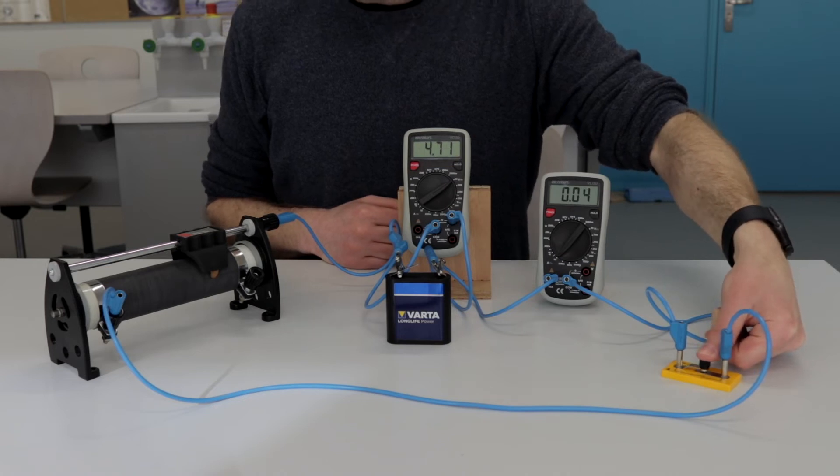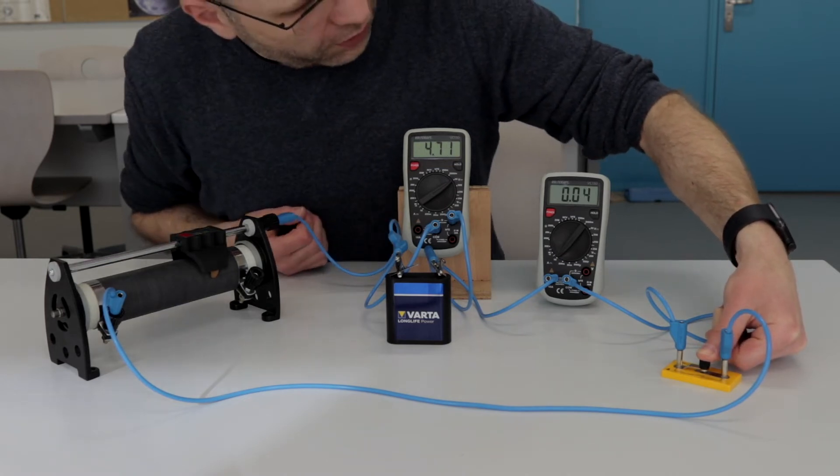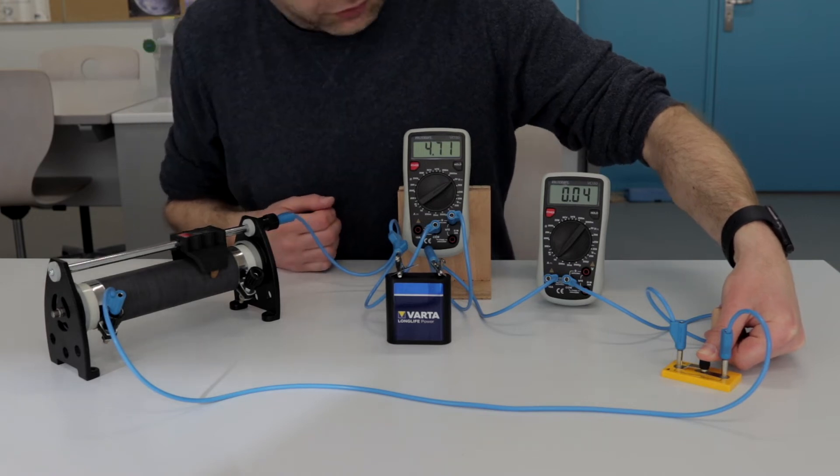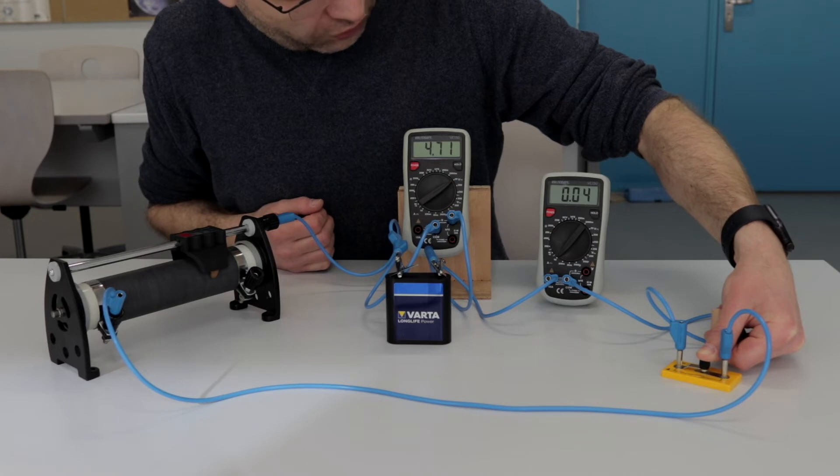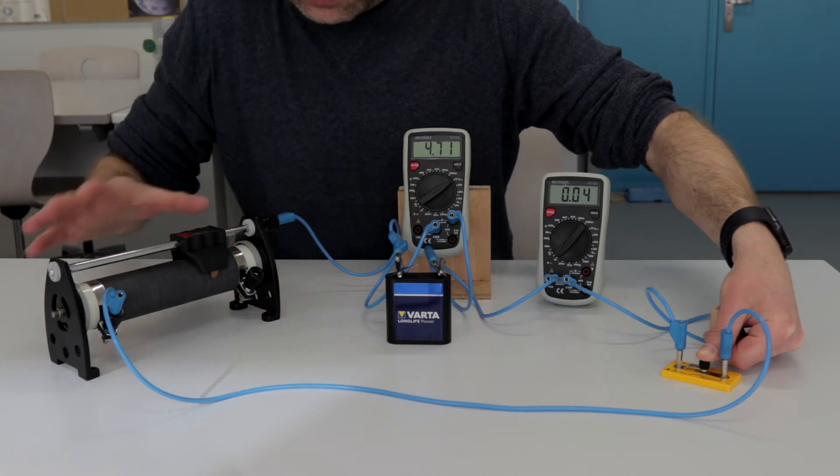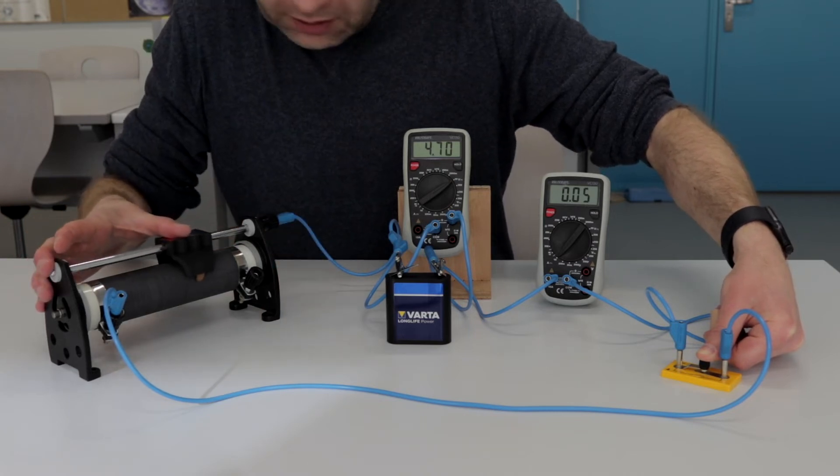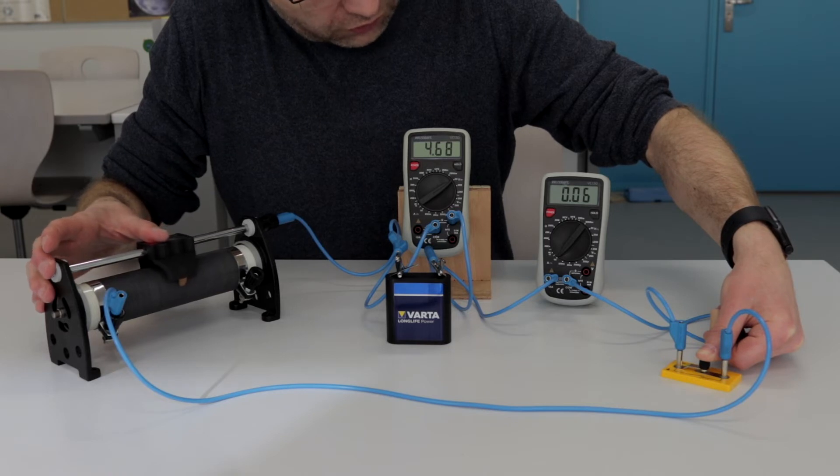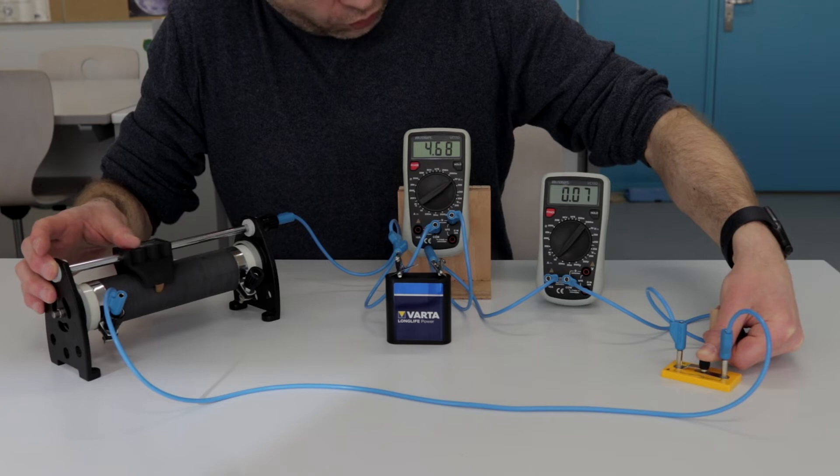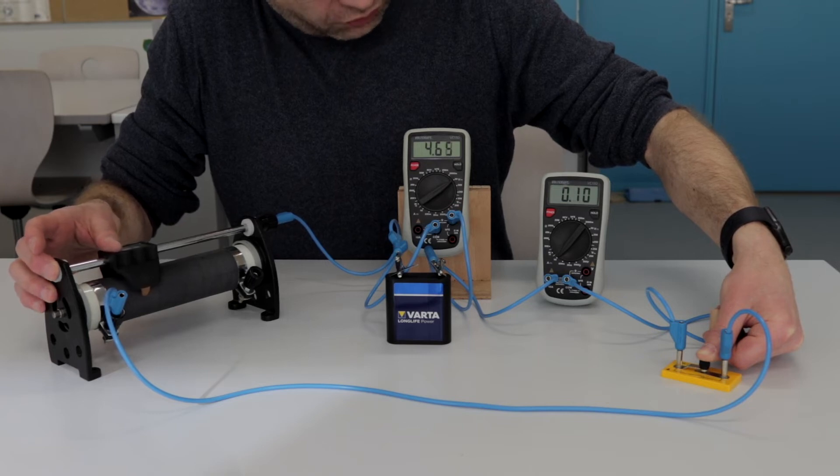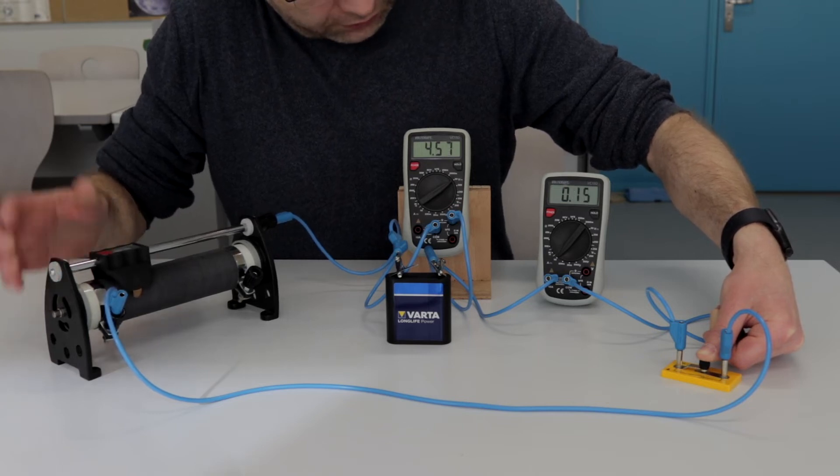So now I'm closing the circuit and we have a reading of 0.04 amps, but now the voltage across the cell, or the battery, has dropped to 4.71. And as I reduce the resistance of the circuit, the voltage across the battery decreases and the current increases.